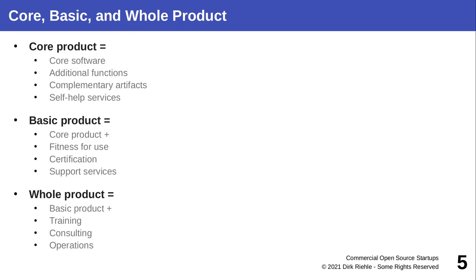The core means really the bare-bones software. The basic product turns the core software into a usable product, because now you're licensing it with some guarantees and support services. And the whole product is the convenient-for-everyone product, where you have all the bells and whistles in place that larger and more established companies expect.